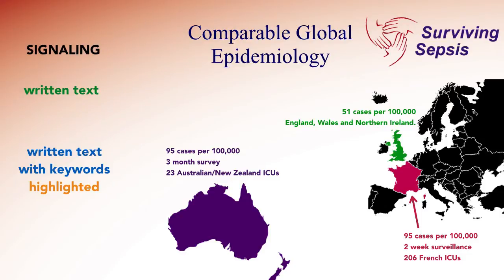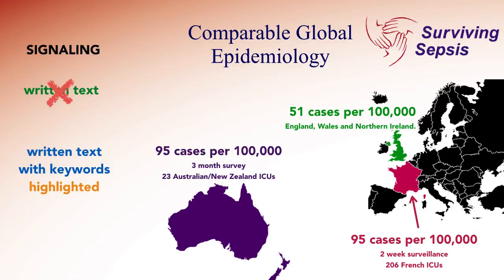The signaling principle says that learners will do better when the key words are highlighted as opposed to not highlighted. We can do the same thing here in this slide — the key words here are the epidemiology, the incidence. So we'll highlight it by just making those words bigger. Now you can see the incidence of 51 cases per 100,000 is much larger, and the details kind of fade more to the background.